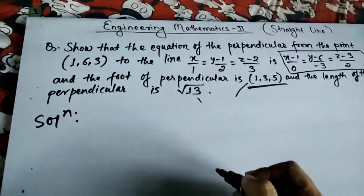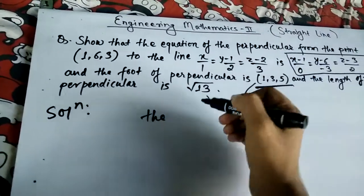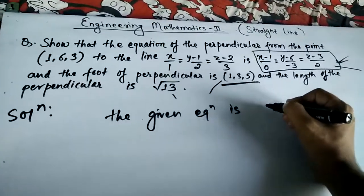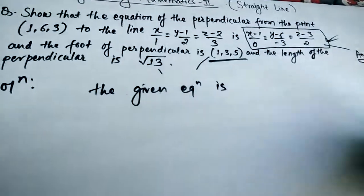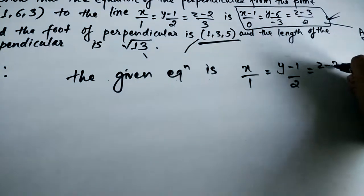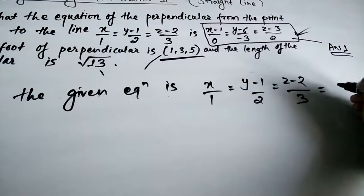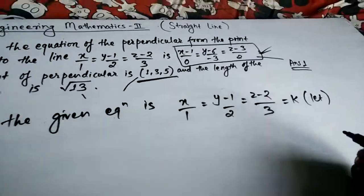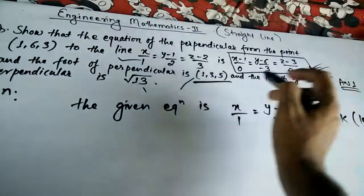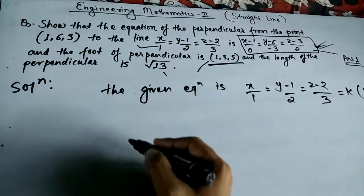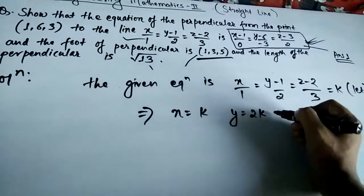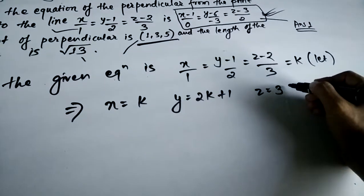The given equation is x/1 = (y-1)/2 = (z-2)/3. Let us suppose this equals k. So we get: x = k, y = 2k+1, z = 3k+2.